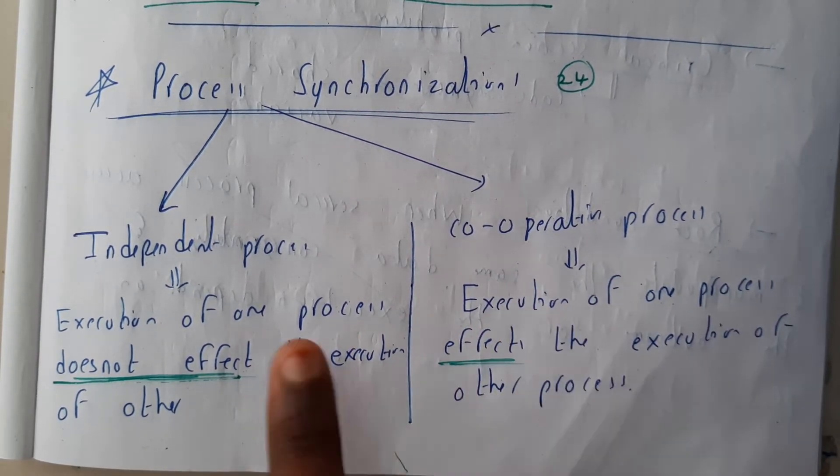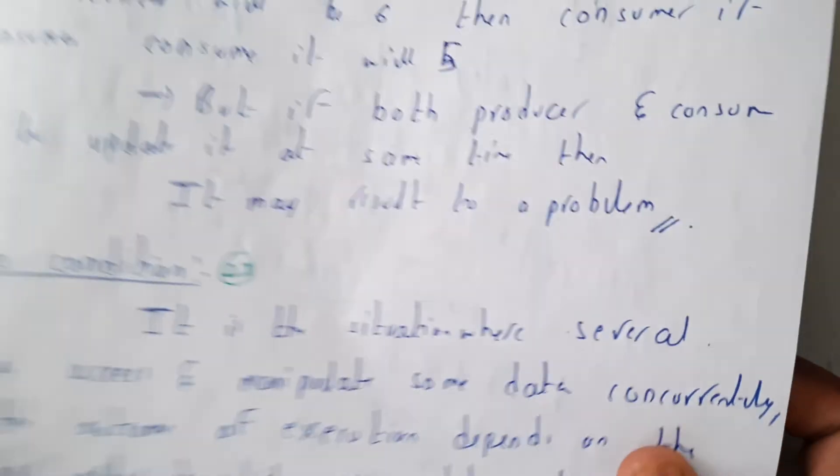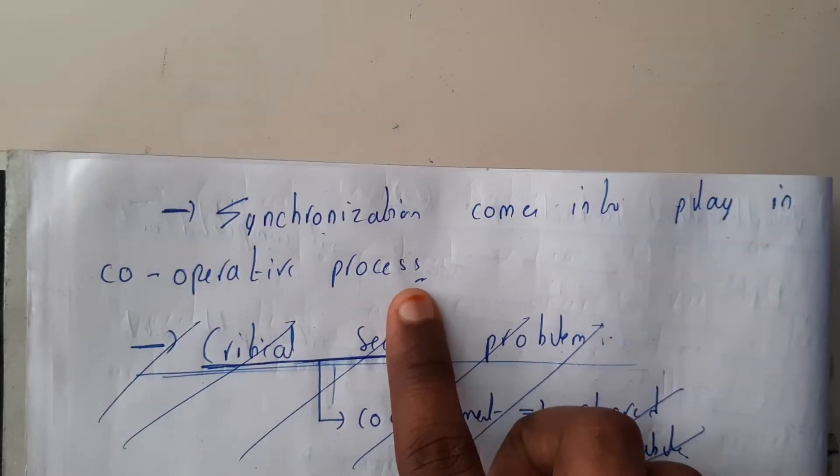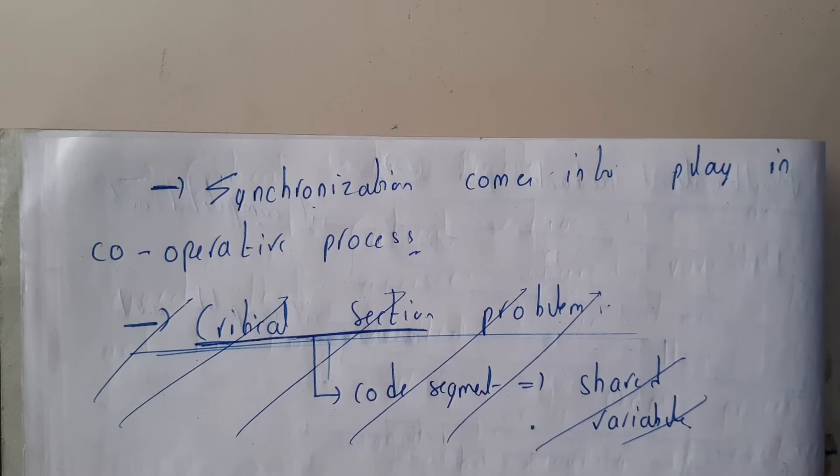Fine, so I hope everyone got a small idea. So basically, synchronization comes into play in cooperative processes because they cooperate with each other. So that's the reason why they come there.